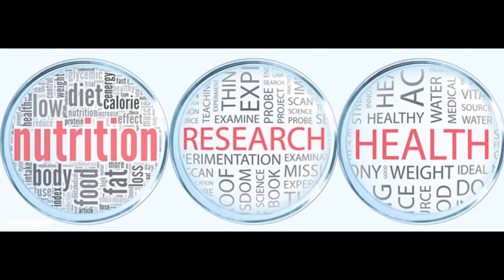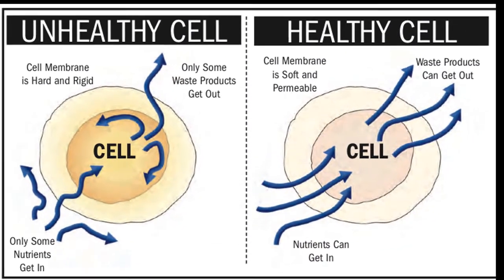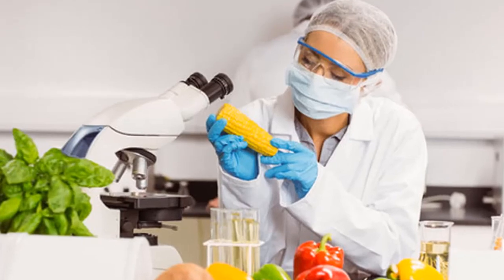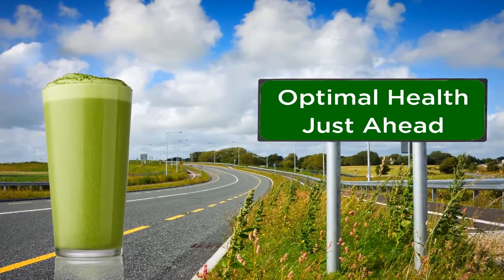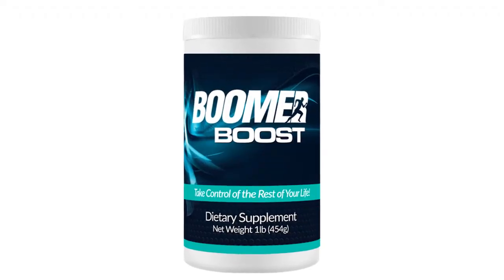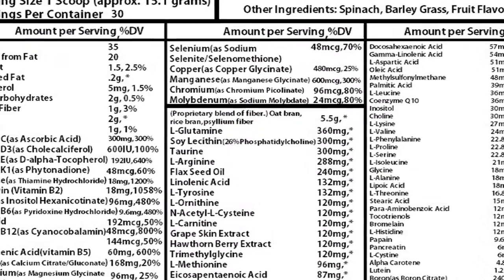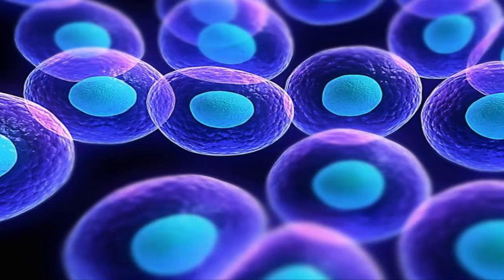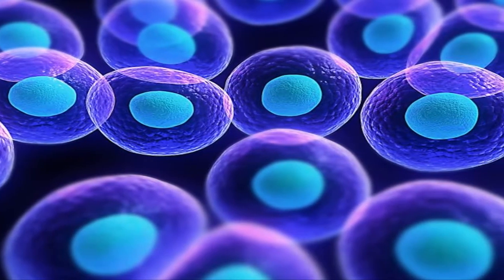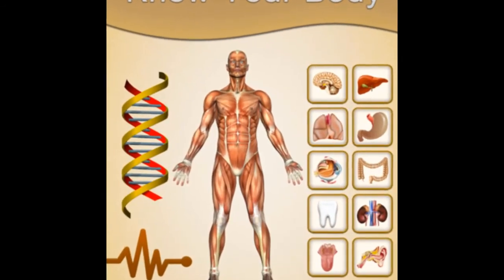Second, we rebuild. Scientifically backed nutritional supplements help provide everything your body needs to rebuild healthy cells and tissue. Years of research in nutritional science has now created the perfect synergistic mix of vitamins, minerals, and specialty nutrients that the body requires to achieve optimal health in an easy-to-use drink. Boomer Boost provides everything your body needs to rebuild healthy cells and tissue. Boomer Boost is scientifically formulated with 70 essential vitamins, minerals, and specialty nutrients in the precise ratios needed to stimulate healthy cell and tissue regeneration.